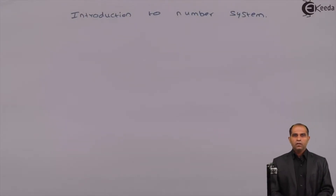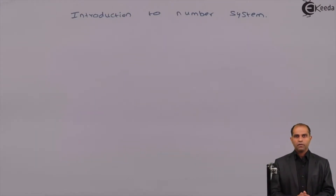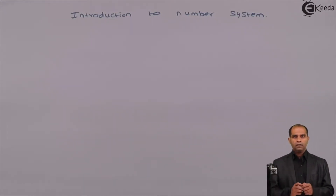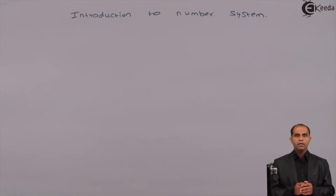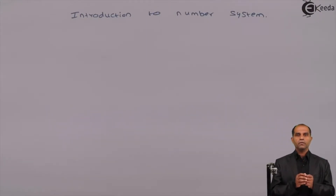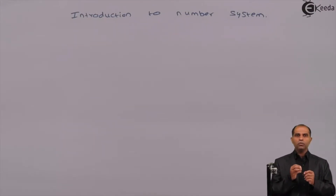Hello friends. Today we will see how exactly numbers are going to be represented in the system. We already dealt with the basic model of a stored computer given by the Turing model or a von Neumann model. Once the entire system is ready, we have to understand how exactly the numbers are going to be stored. Rather than speaking of it as a number, let us see how data is going to be represented in the system.